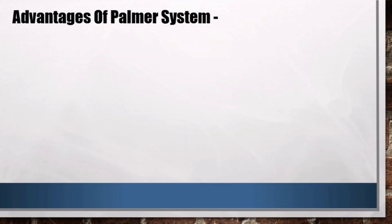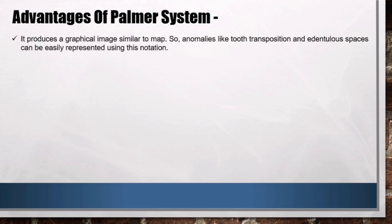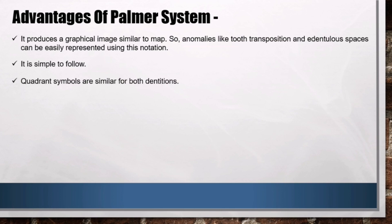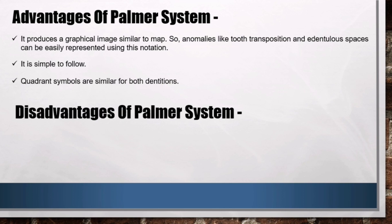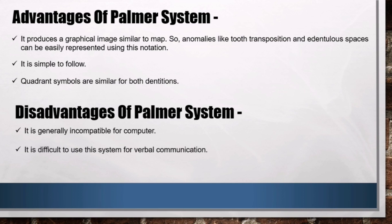Advantages of the Palmer system: one major advantage is that it produces a graphical image similar to a map, so anomalies like tooth transposition and edentulous spaces can be easily represented. It is simple to follow and user friendly. Also, the quadrant symbols are similar for both dentitions. Disadvantages: it is generally incompatible with computers, it is difficult to use for verbal communication, and there are more chances of error while designating the site of a tooth.